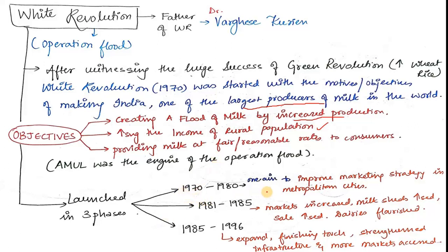Operation Flood was launched in three phases. The first phase (1970–1980) aimed to improve marketing strategy in metropolitan cities — Amul's iconic advertising campaign is a great example. The second phase (1981–1985) saw the milk shed expand, sales increase and dairies flourish. The third phase further strengthened infrastructure and accessed more markets, completing the transformation of India's dairy sector.